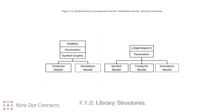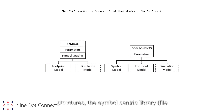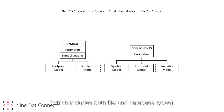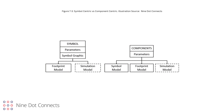Section 7.1.2: Library Structures. There are two common types of library structures: the symbol-centric library, which is file-based, and the component-centric library, which includes both file and database types. In this figure, the dotted lines indicate optional models.